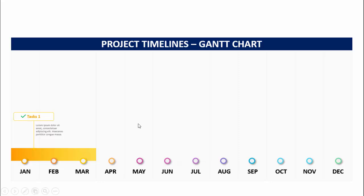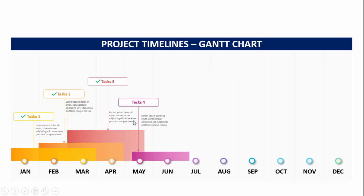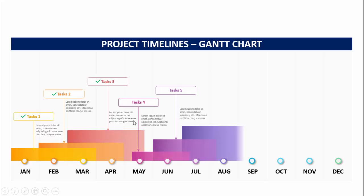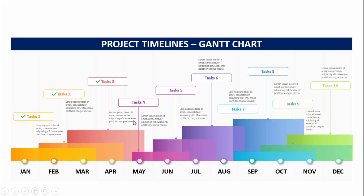Likewise I can show all the remaining tasks. The next task starts from mid-February until April, and this is task two with its detailed text. Then task three, task four, five, six, seven, eight, nine, and the last is task ten. Depending on your requirement you can increase or decrease the number of tasks.